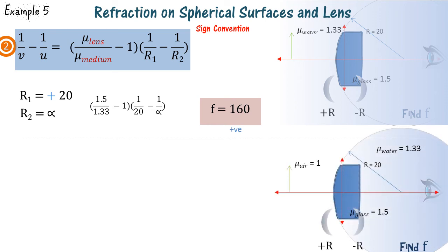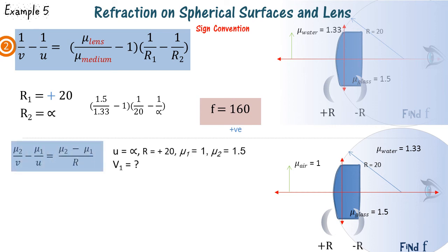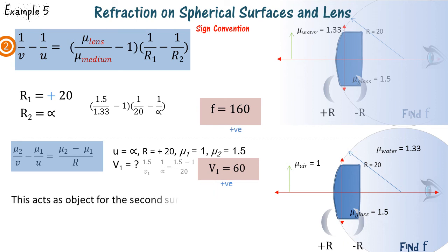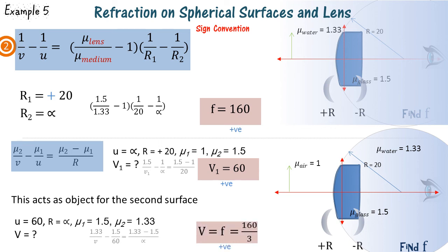In the second example, the lens is placed in an aqueous chamber like an eye, and the object is placed outside in air. We use our first equation to find the focal length, taking u as infinity. Mu 1, where the object is placed, is 1. We find v, which acts as a virtual object for the second surface. The result f equals 160/3, which is positive, signifies the arrangement is acting like a convex lens.